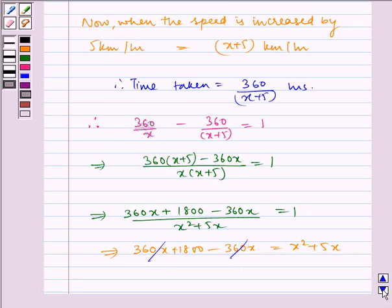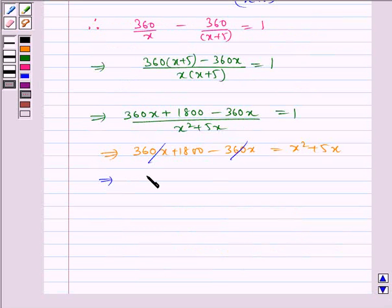This gets cancelled. So we are left with x square plus 5x minus 1800 equals 0.